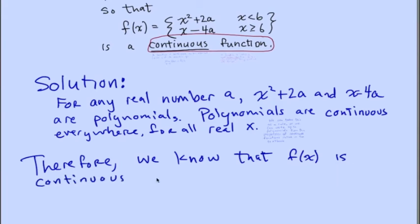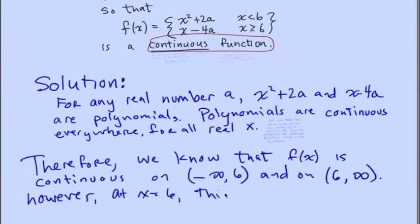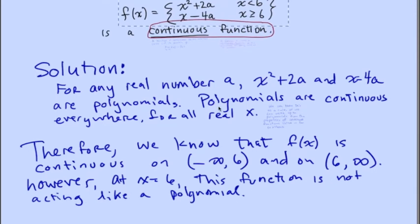Therefore, we know that f(x) is continuous on negative infinity to 6 and on 6 to positive infinity. However, at x equals 6, this function does not act like a polynomial.